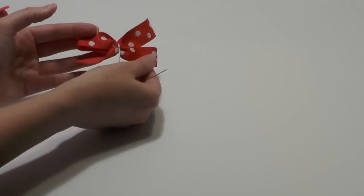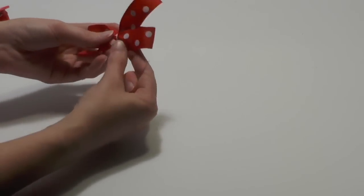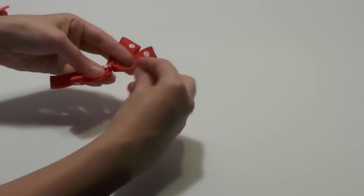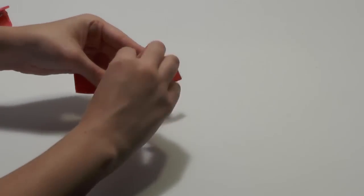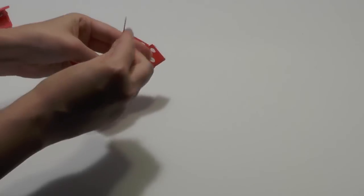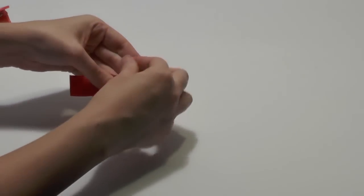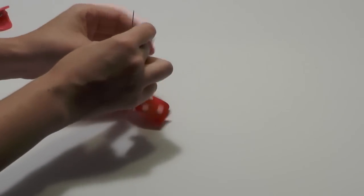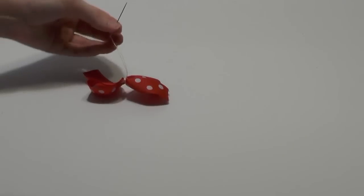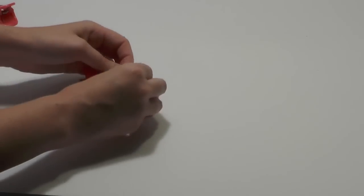Once you have it off of the template, what I like to do is go to the back and just stick my needle through, weave in and out, and then you can clip this and tie it off.